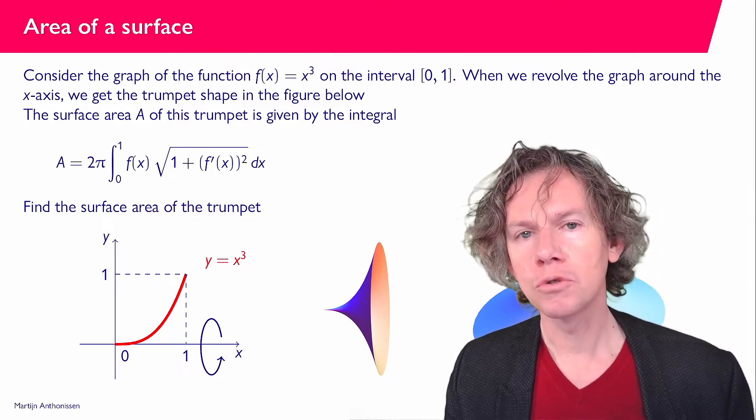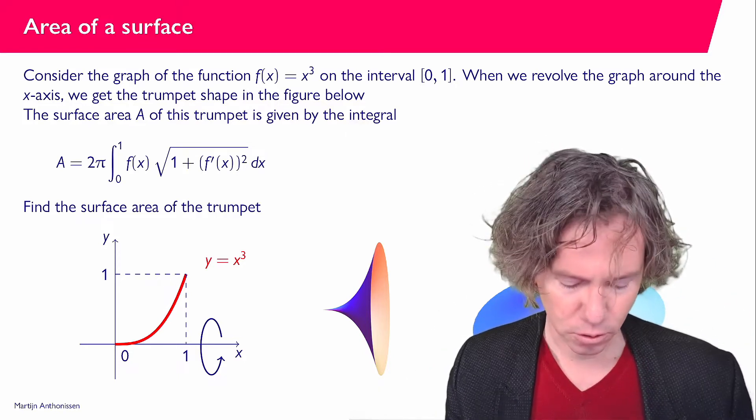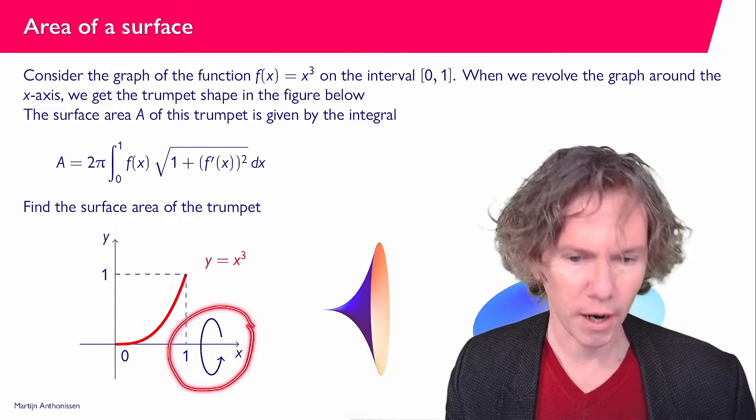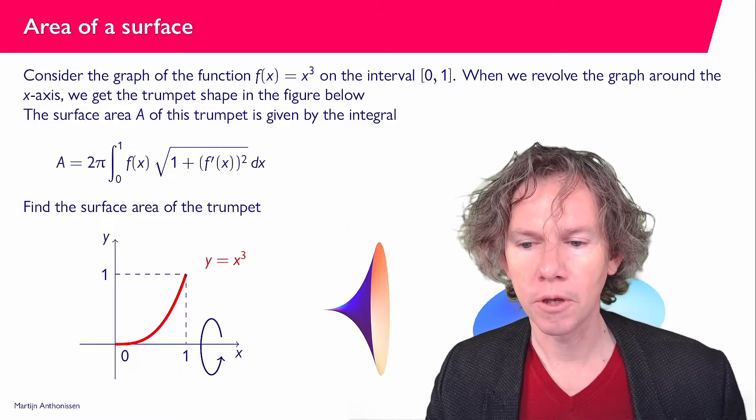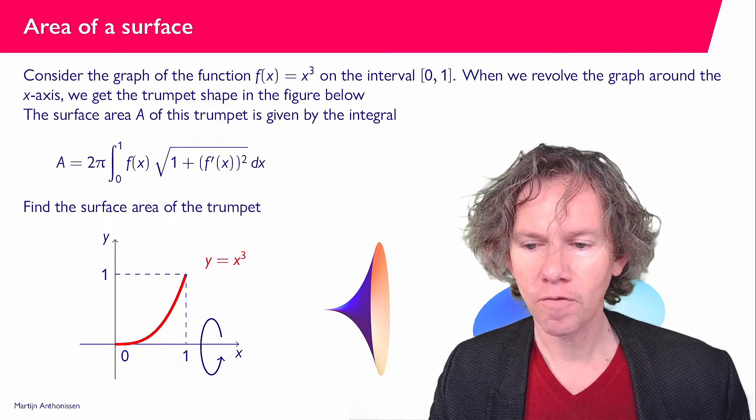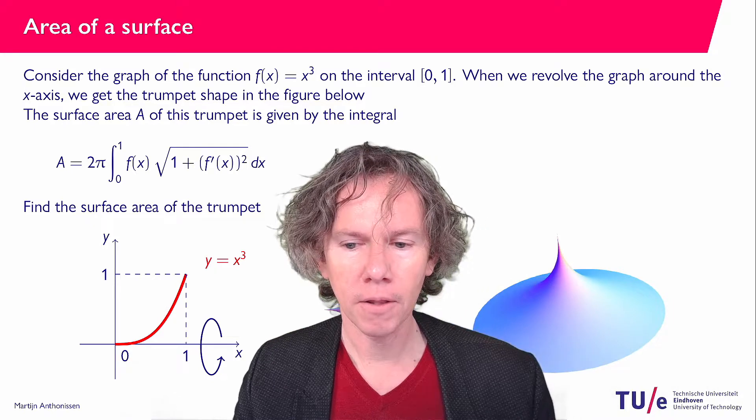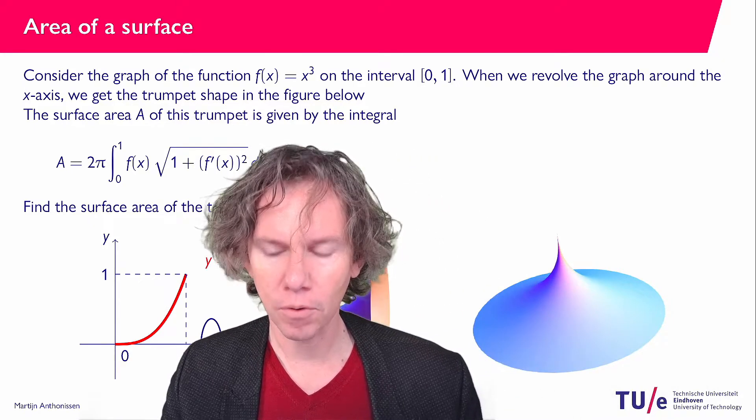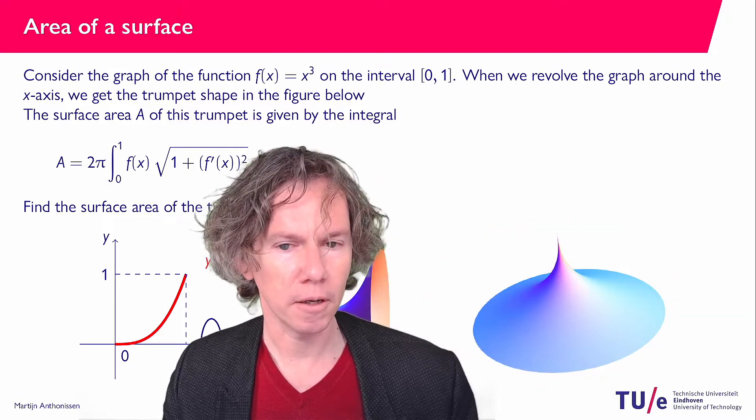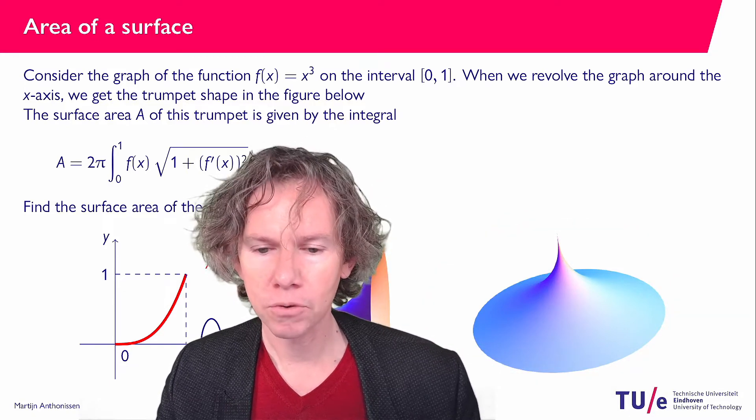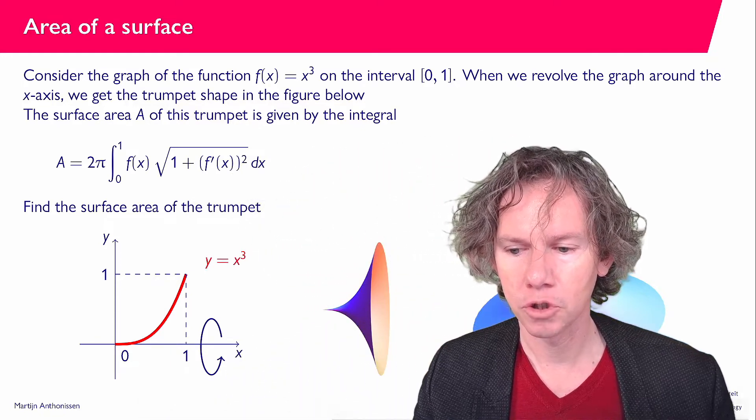And now what we're going to do is we're going to rotate this graph around the horizontal axis, as is indicated here in the graph. And then what you get is this kind of trumpet shape here. And if you look at this trumpet from a bit of a different angle then you get the graph here on the right. So here we are looking at the top of it and it's a bit trumpet-like. Now what we're being asked to do is to compute the surface of this trumpet.